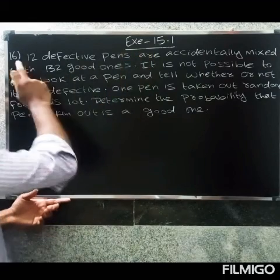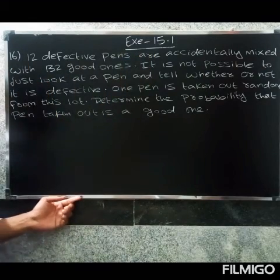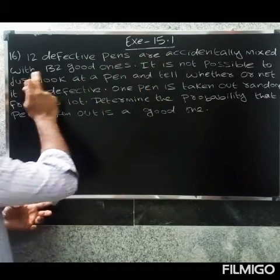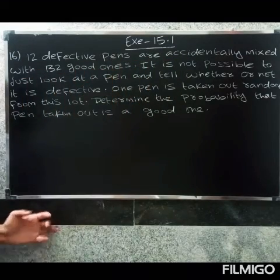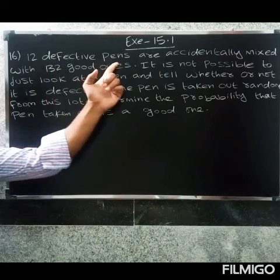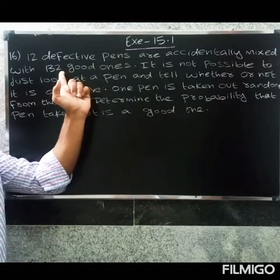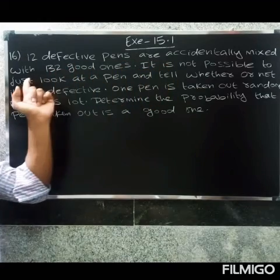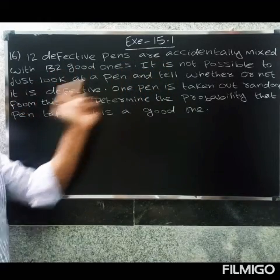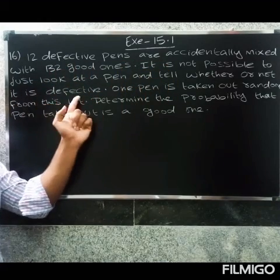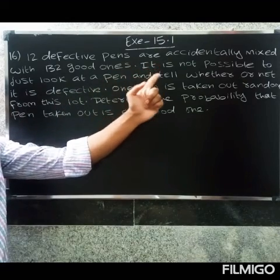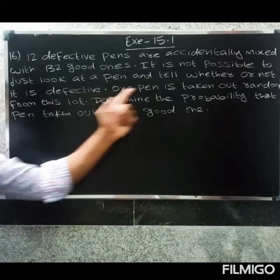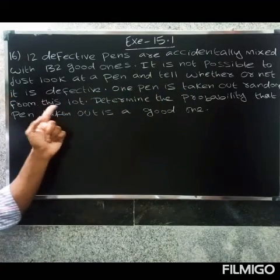Welcome friends. This is exercise 15.1, question 16. 12 defective pens are accidentally mixed with 132 good ones. It is not possible to just look at a pen to determine whether or not it is defective. One pen is taken out randomly from this lot.